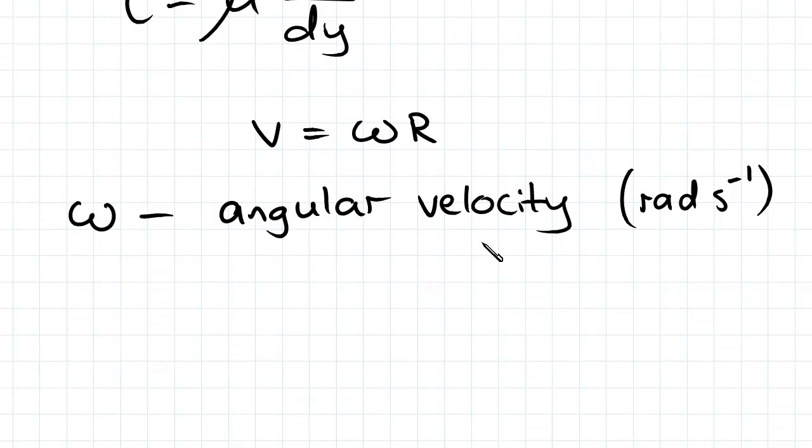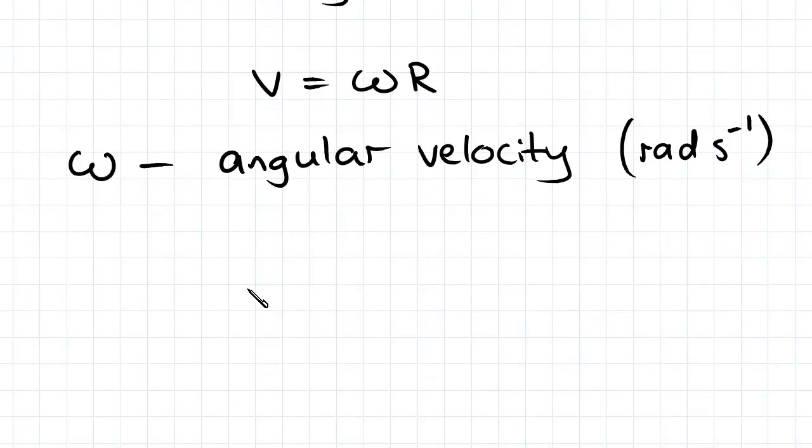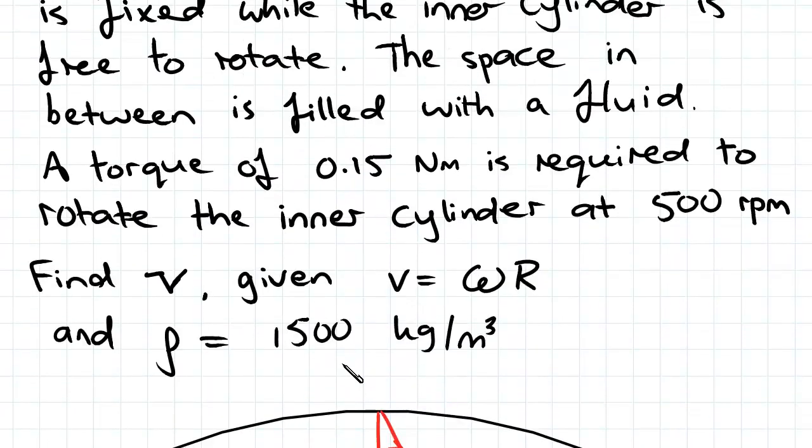So angular velocity is measured in radians per second, and we need to convert the revolutions per minute we were given in the question, which is 500.